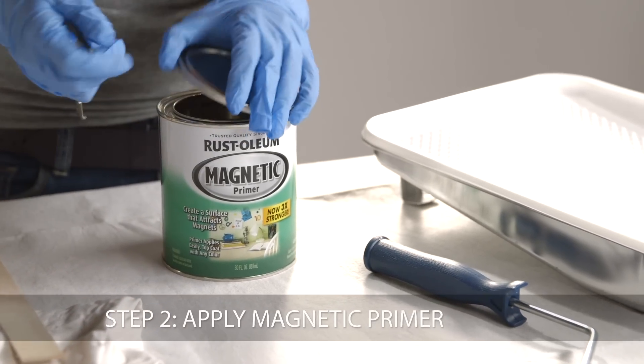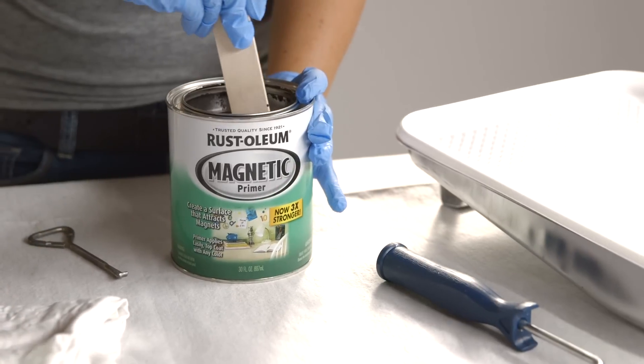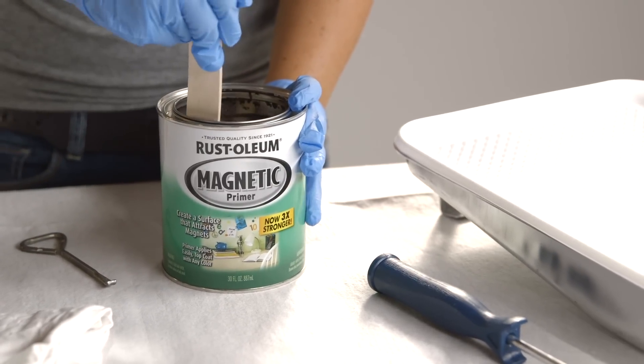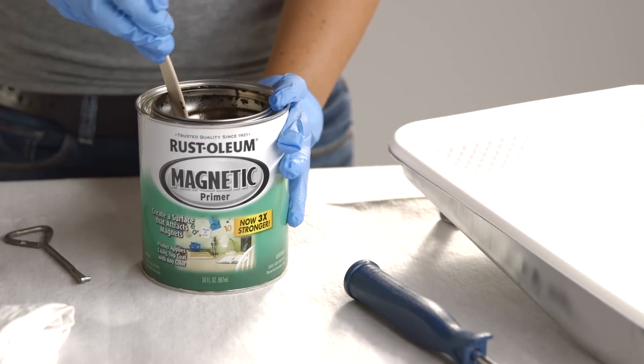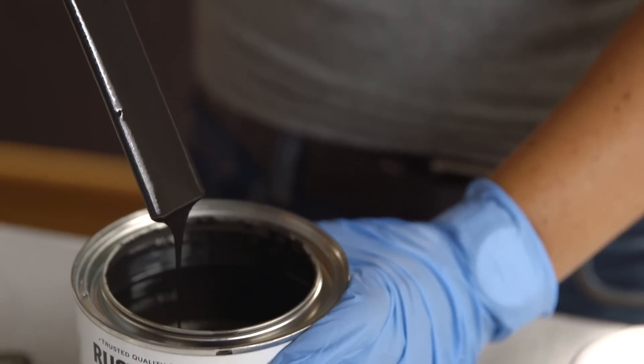Now you're ready to apply the Magnetic Primer. Begin by stirring the primer thoroughly, scraping the bottom of the can with a stir stick to ensure any settled pigment is properly mixed. Stir to a smooth, lump-free consistency.